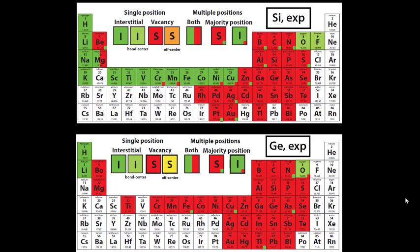These two pictures here are experimental overviews of the information we have about impurity positions in silicon and germanium from experiments. I will not discuss these two pictures in detail, just highlight two features. There are many white spots, there are many elements for which we do not know the position, and there are some differences between silicon and germanium.